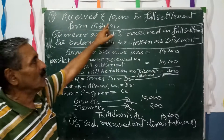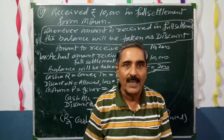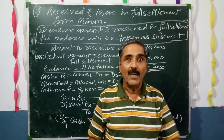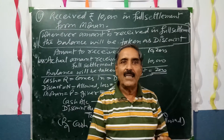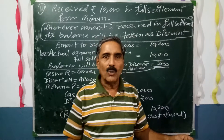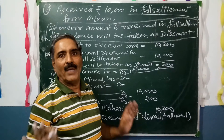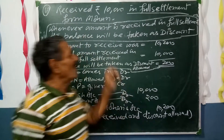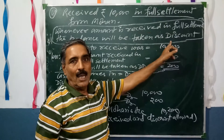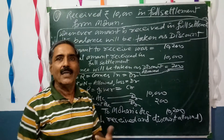Fourth question: received ₹10,000 in full settlement from Mohan. Whenever an amount is received in full settlement, no further amount will be received. The balance is taken as discount allowed. We were supposed to receive ₹10,200 but actually received ₹10,000, so the ₹200 difference is discount allowed. When we are receiving in full settlement, we are allowing discount; when we are paying in full settlement, we are receiving discount.